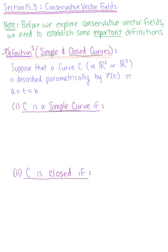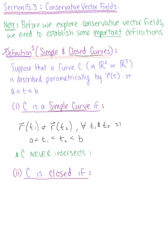We say that C is a simple curve if vector R(t₁) does not equal vector R(t₂) for all t₁ and t₂, such that t₁ is greater than a but less than t₂, which is less than b. This means that C never intersects itself between the endpoints.